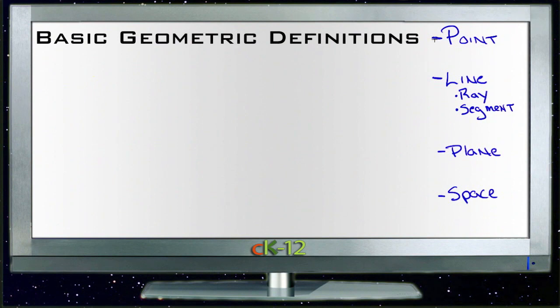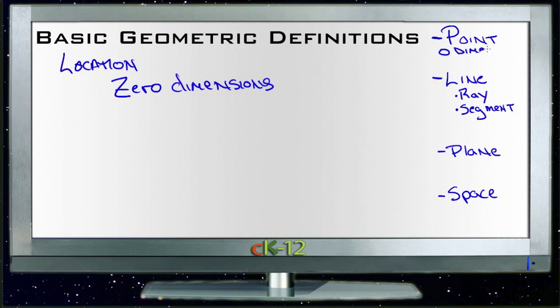The first term we're going to deal with is point. A point can be thought of as a location in space. It has zero dimensions from a mathematical standpoint. That means it has no length, no width, no height, and actually is not a physical thing at all. It just is a description of a location. So a point is zero dimensions and is just a location in space.